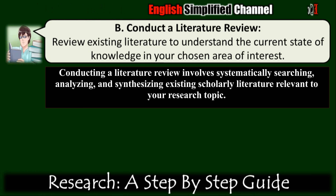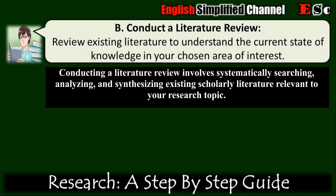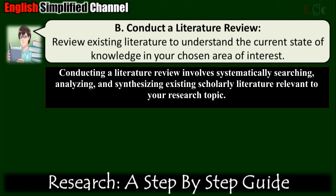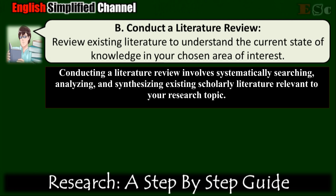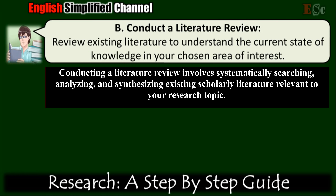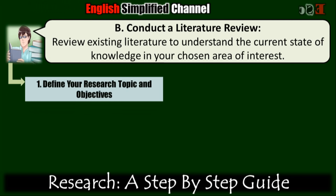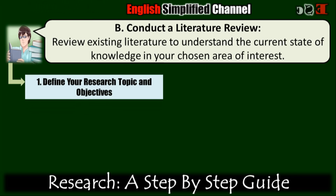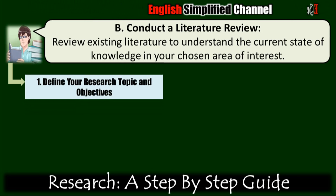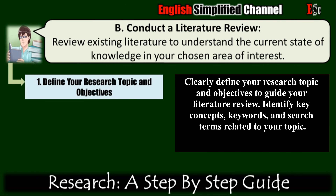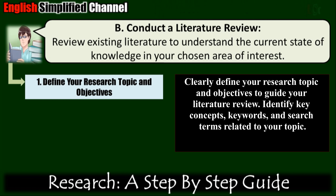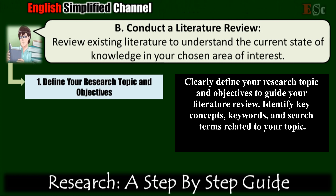Conducting a literature review involves systematically searching, analyzing, and synthesizing existing scholarly literature relevant to your research topic. Here's a step-by-step guide on how and where to conduct a literature review. First, define your research topic and objectives. Clearly define your research topic and objectives to guide your literature review. Identify key concepts, keywords, and search terms related to your topic.